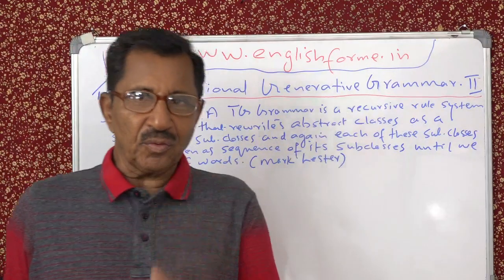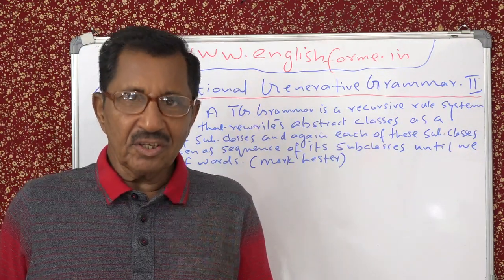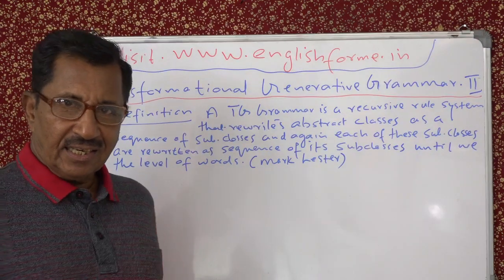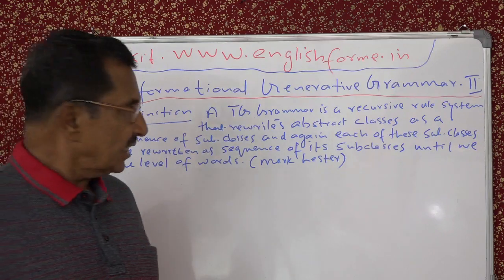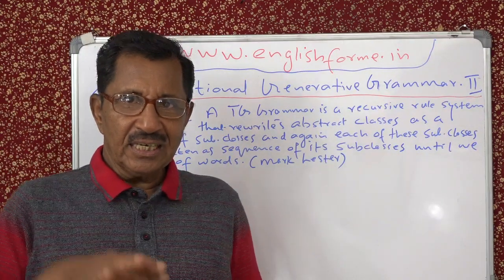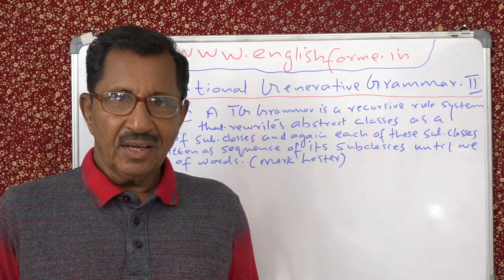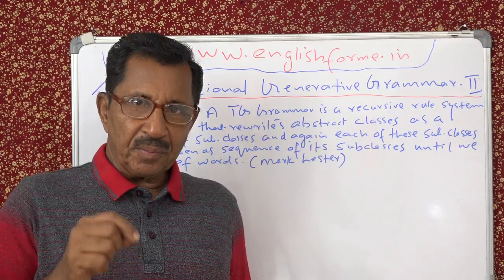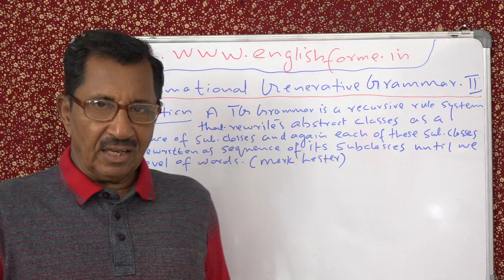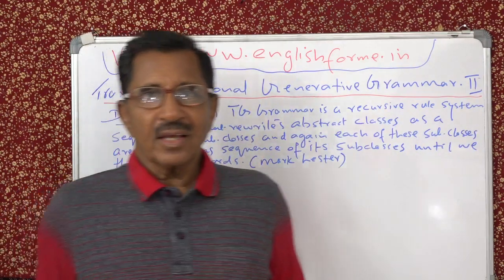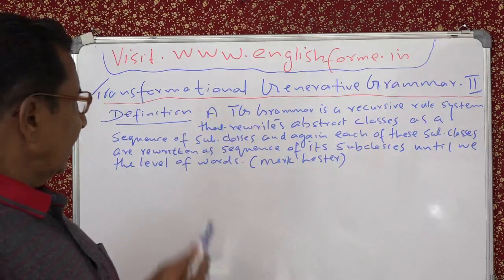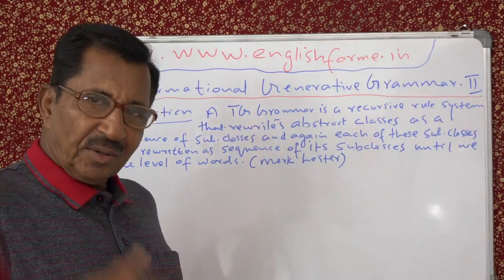By a finite set of rules you can predict or produce an infinite number of sentences. Now what is transformational grammar? It is a definition by Mark Lester — he is an authority on that. So it is TG grammar, a Transformational Generative Grammar. It is a recursive rule system. Recursive means repeating the same structure. We took the example of a concrete noun modified by a prepositional phrase: 'the man in the store across the street.' That is the recursion we saw.